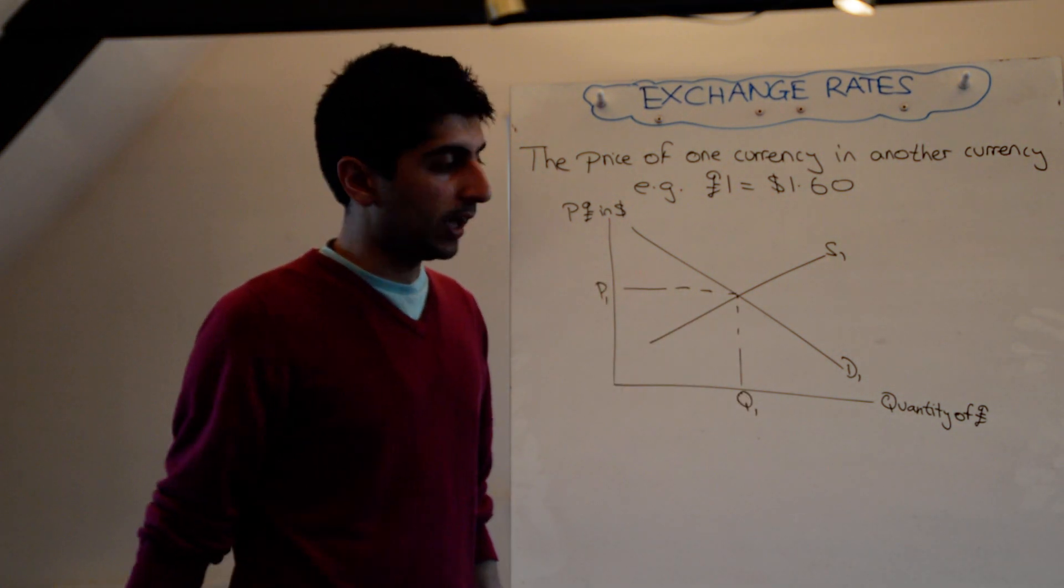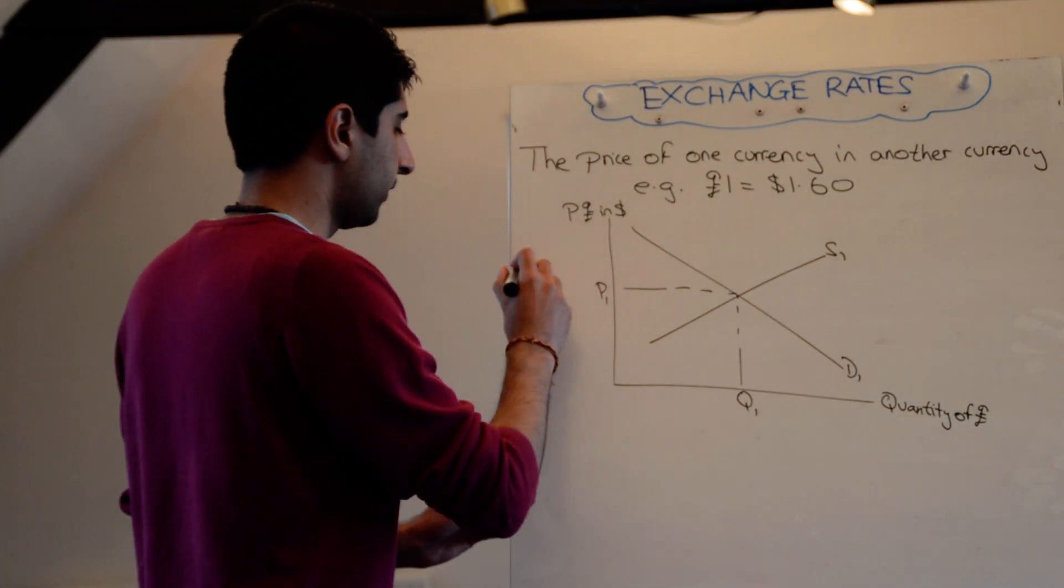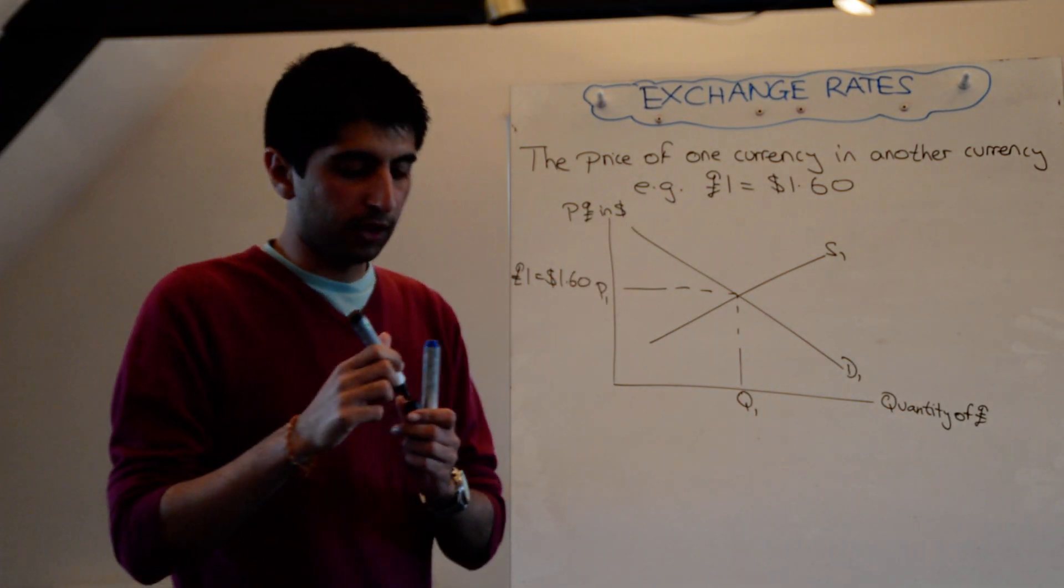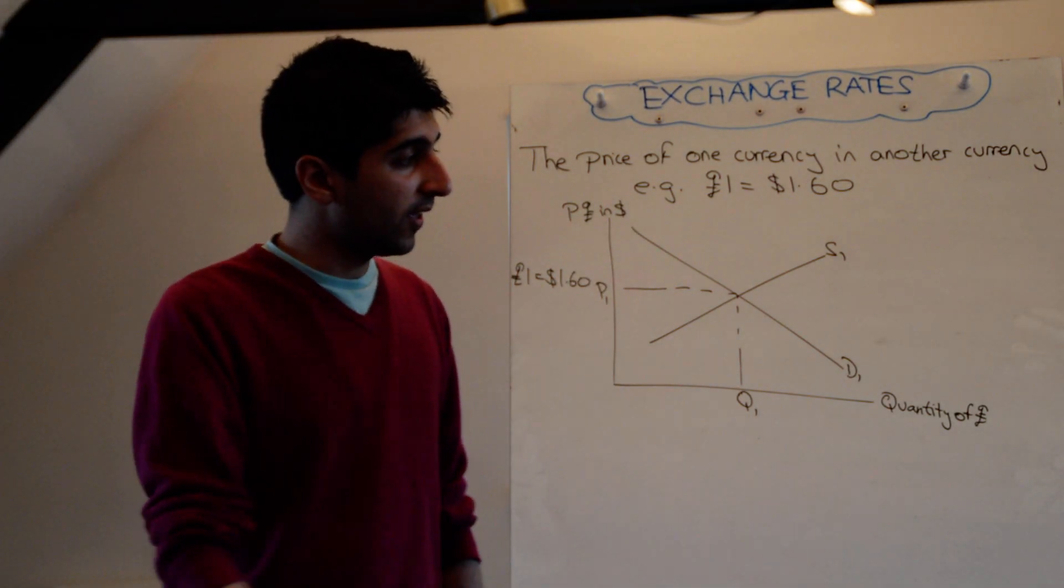That gives us a price and the quantity, and the price is very simply the exchange rate, which in this case is one pound is equal to one dollar sixty. That's it.